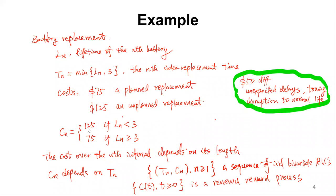If Ln is less than 3, it is an unplanned replacement at $125. If Ln is greater than 3, we replace at time 3 — a planned replacement at $75. So the cost over the nth interval depends on its length: cn depends on tn, where tn equals the minimum of Ln and 3. Thus (tn, cn) is a sequence of IID bivariate random variables, and ct — the total net cost by time t — is a renewal reward process.